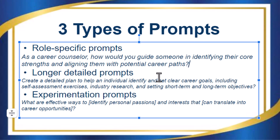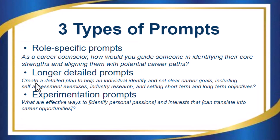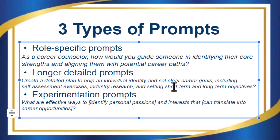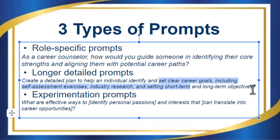For a longer detailed prompt: create a detailed plan to help an individual identify clear career goals, including self-assessment exercises and industry research. Here, first you tell it that you want a detailed plan, and you also give it a number of items or sections you want in the output. You give it very clear guidance, and by doing that, you basically determine the structure of the output you want. If you know you want something specific, the better you can tell ChatGPT what you want, the better it will be at giving you that output.